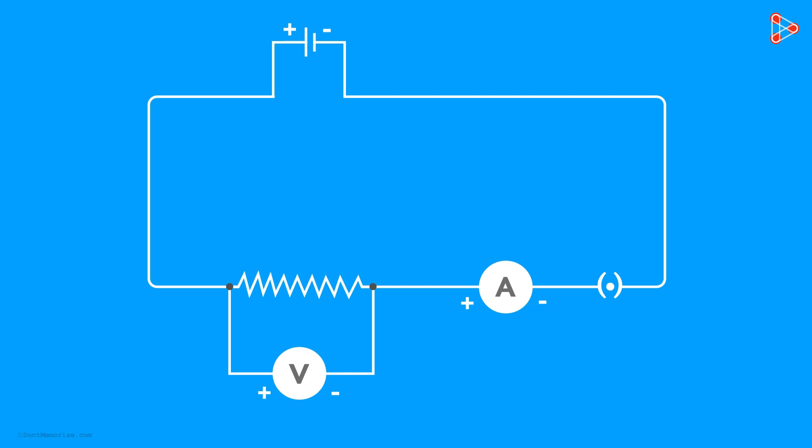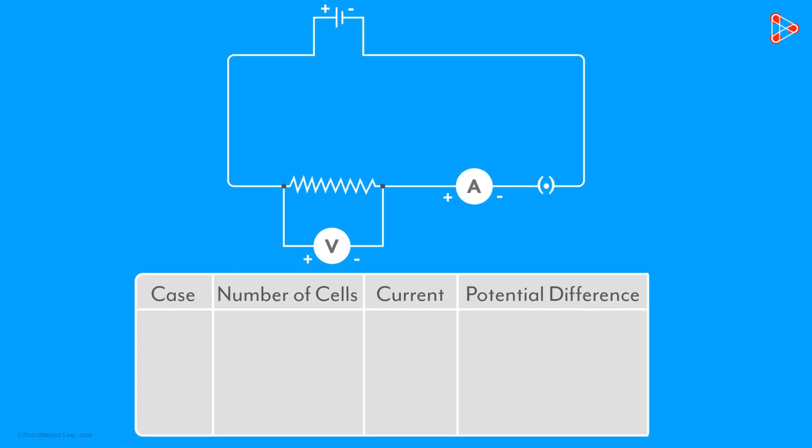We close the plug key and note down a few readings. We need to note down the reading in the ammeter and the reading in the voltmeter. Let the current and the potential difference be I₁ and V₁ respectively.